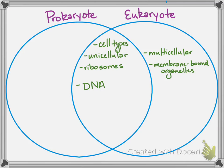DNA is found in both. You've got to have genetic material in cells — it's part of what makes a cell a cell. But where and how it's found is a little bit different. Prokaryotes have a ring-like chromosome found in a region called a nucleoid, while in eukaryotes we have rod-like chromosomes contained inside a double membrane, and that structure is called the nucleus.